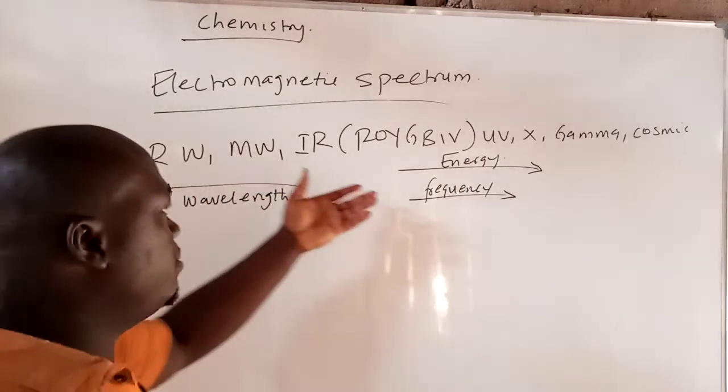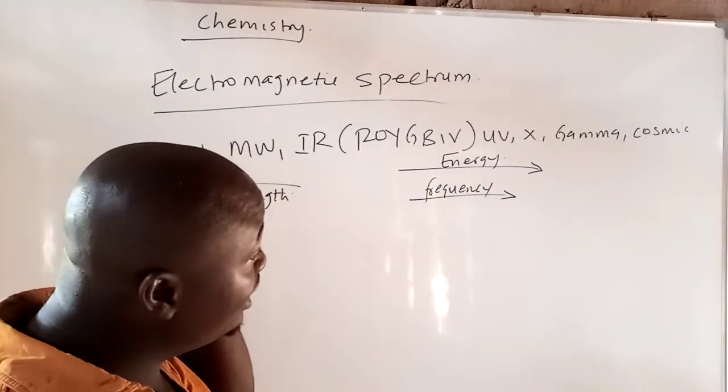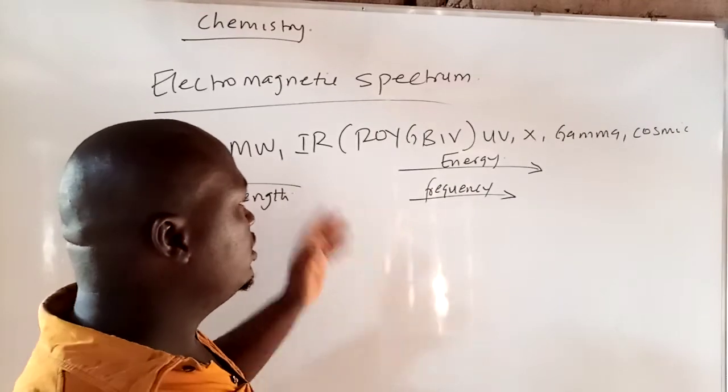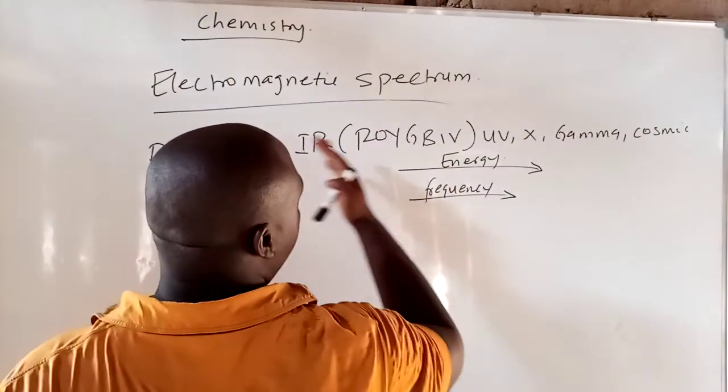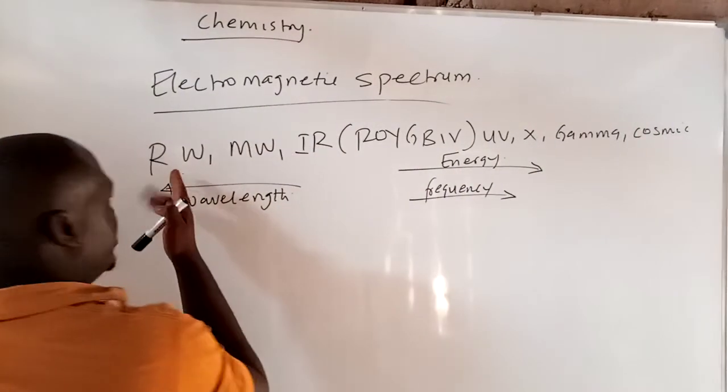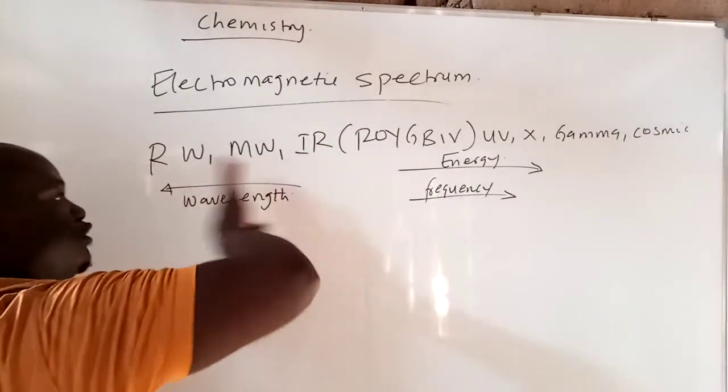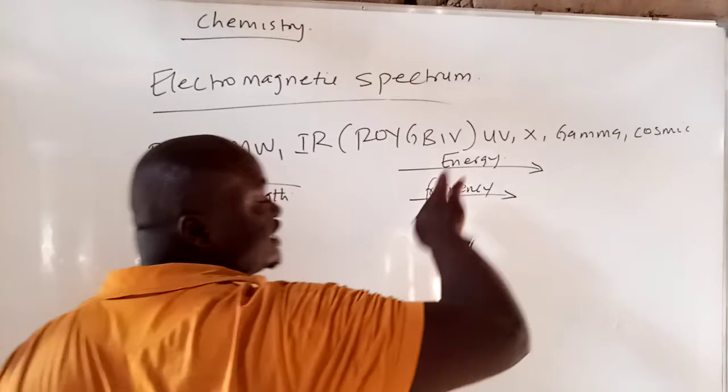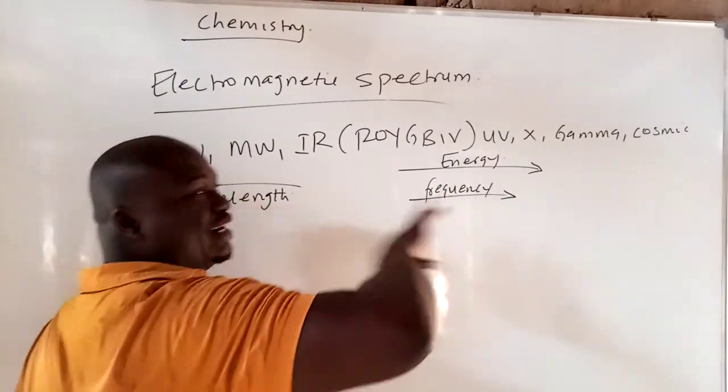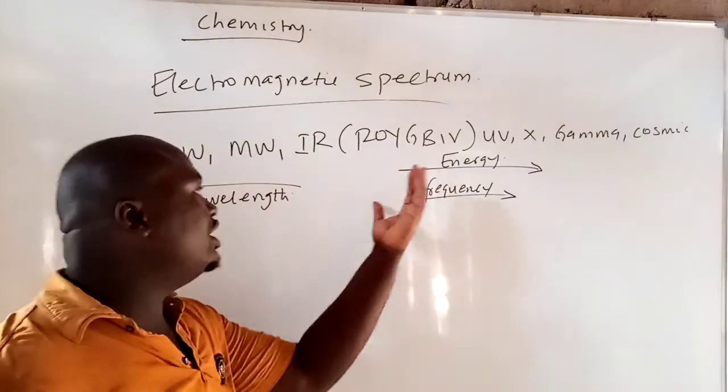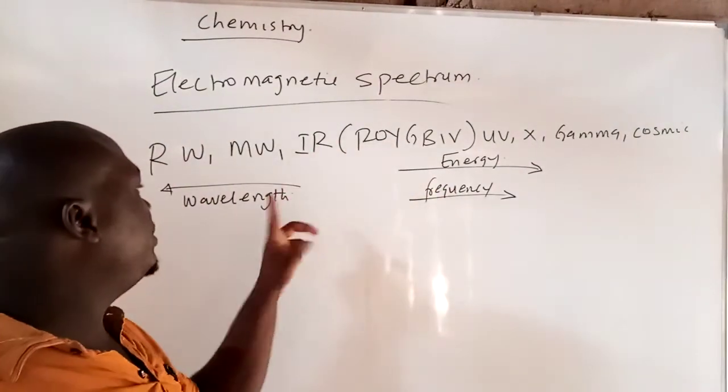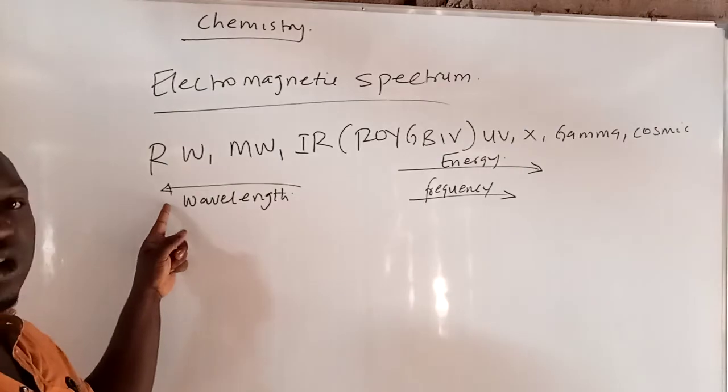Like I've already called the names for you, write it down on your jotter. Now, energy increases by the right. So that means as you are moving to the right from radio wave, microwave, as you are moving to the right, the energy is increasing, the frequency is increasing. And then as you are moving towards the left, what is happening is the wavelength is increasing. You can see the arrow.